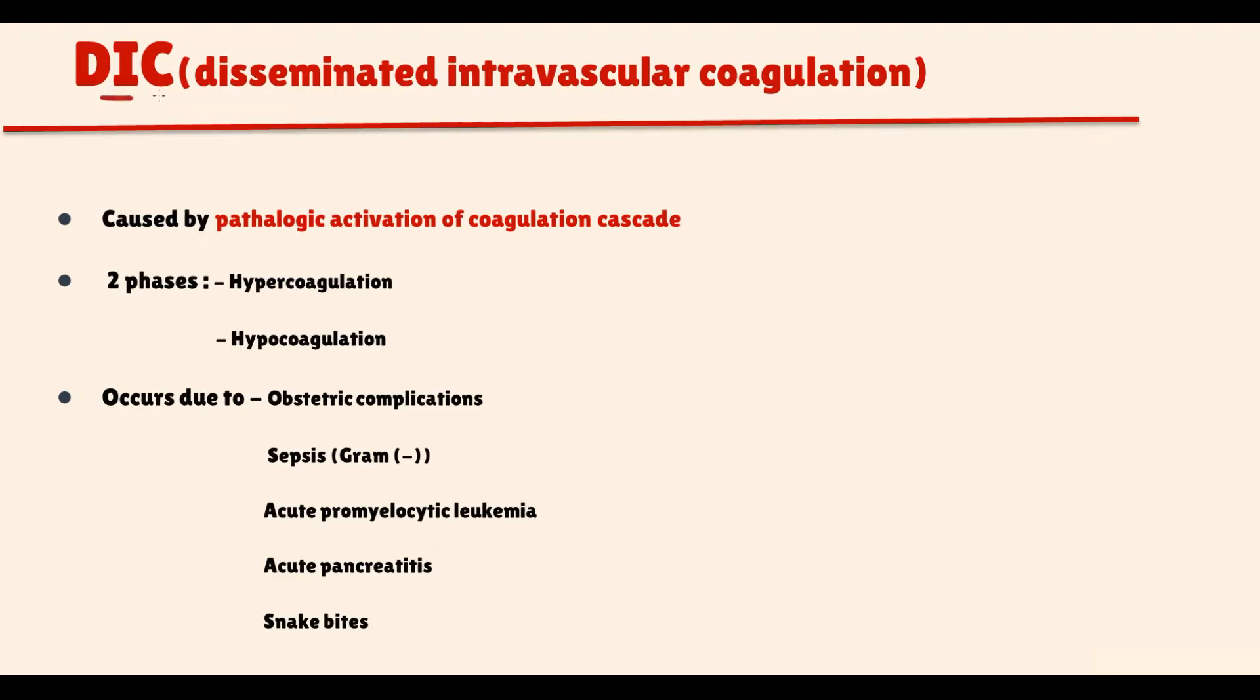Disseminated intravascular coagulation is caused by pathological activation of the coagulation cascade. DIC has two phases. Initially hypercoagulation develops, and then hypercoagulation is changed by hypocoagulation. DIC always occurs secondary to another disease, so there are certain conditions that can induce the hypercoagulation phase of DIC.